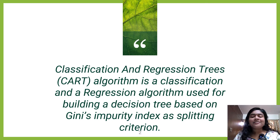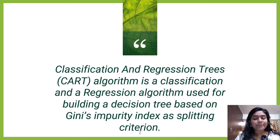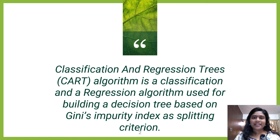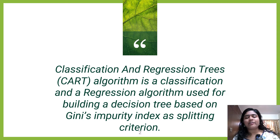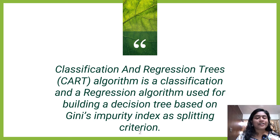Classification and Regression Tree algorithm is a classification and regression algorithm used for building a decision tree based on the Gini impurity index as a split criterion. In ID3 and C4.5, we were using entropy or information gain to split our different nodes, but in CART you make your decision based on the Gini impurity index.